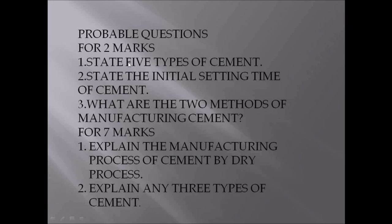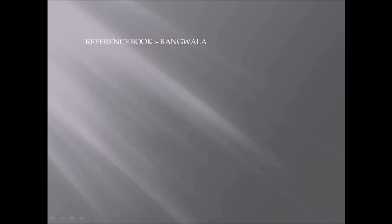These are the probable questions that you may get for two marks: state five types of cement; state the initial setting time of cement — if your examination simply says 'cement', mention the initial setting time of Ordinary Portland Cement or OPC; and what are the two methods of manufacturing cement? For long-answer type questions, you may get questions like: explain the manufacturing process of cement by dry process; or explain any three types of cement. For reference, you can refer to Rangwala Engineering Materials.